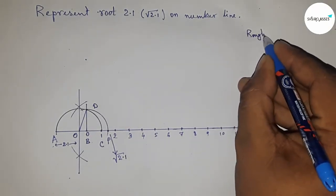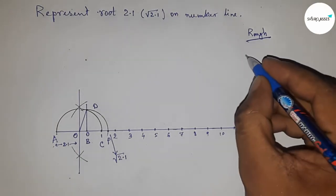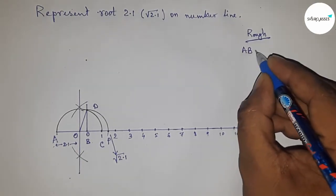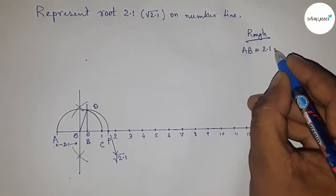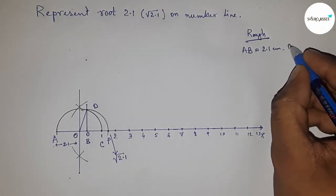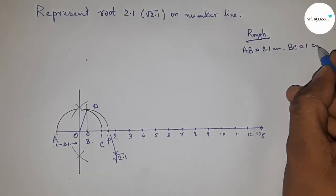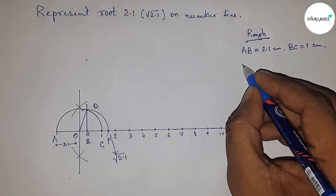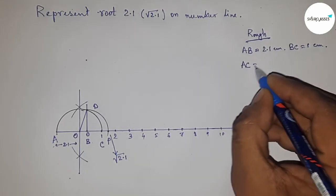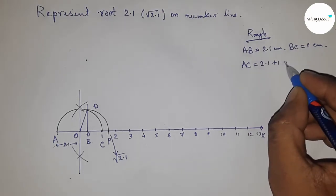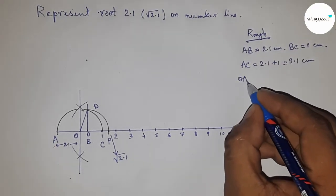Now I'm going to roughly discuss the calculation. Given: AB equals 2.1 centimeters and BC equals 1 centimeter. So AC equals 2.1 plus 1 equals 3.1 centimeters.